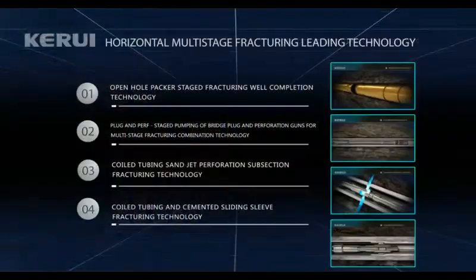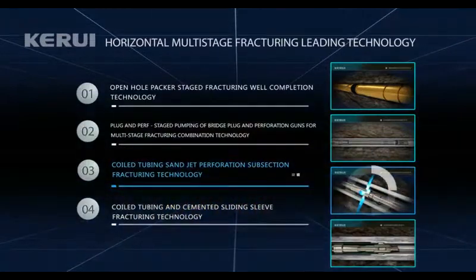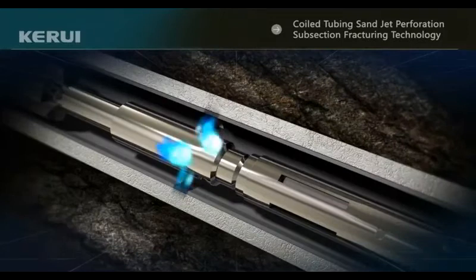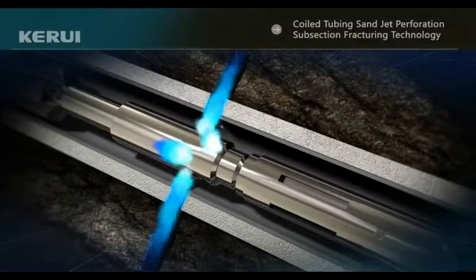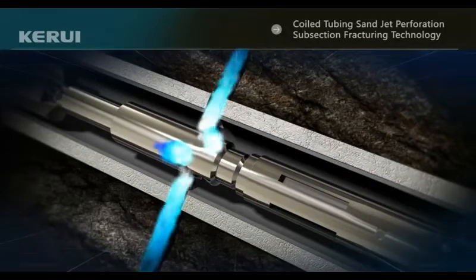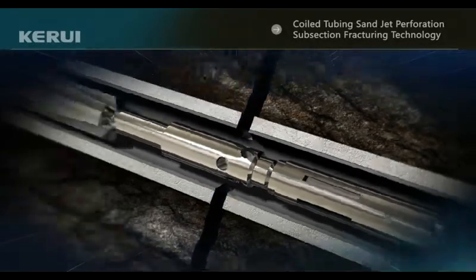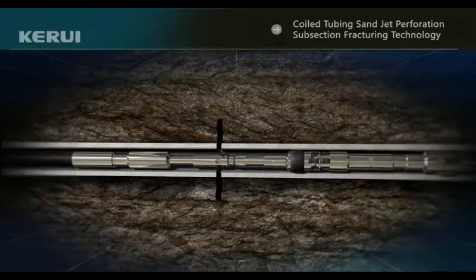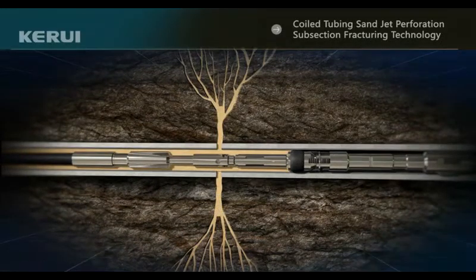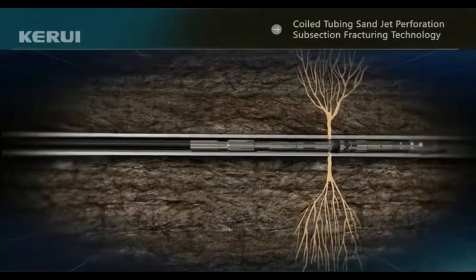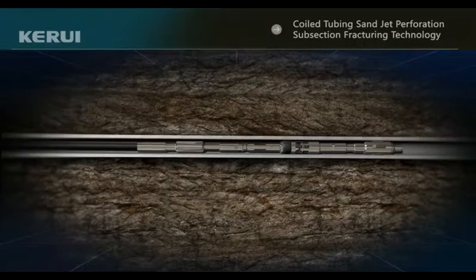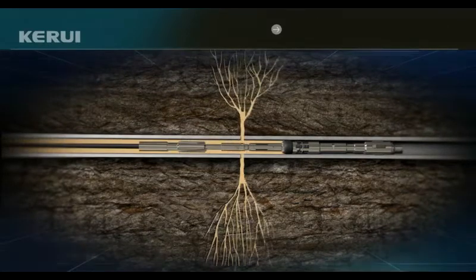Coiled tubing sand jet perforation sub-suction fracturing technology: at the corresponding reservoir depth, abrasive perforating is performed through coiled tubing with an abrasive perforating device, establishing communication between the reservoir and the well bore, and zonal isolation with a retrievable packer. The hydraulic fracturing fluid is then pumped through the annulus to achieve high proppant concentrations. The coiled tubing is pulled up to the next section and the process repeated until multi-stage hydraulic fracturing treatment is completed.